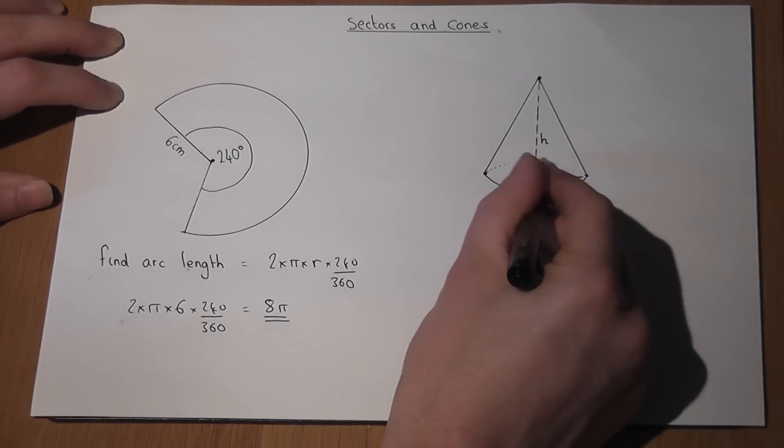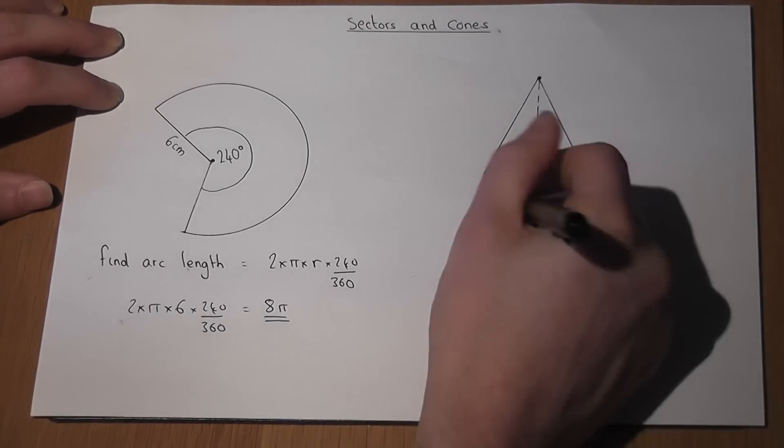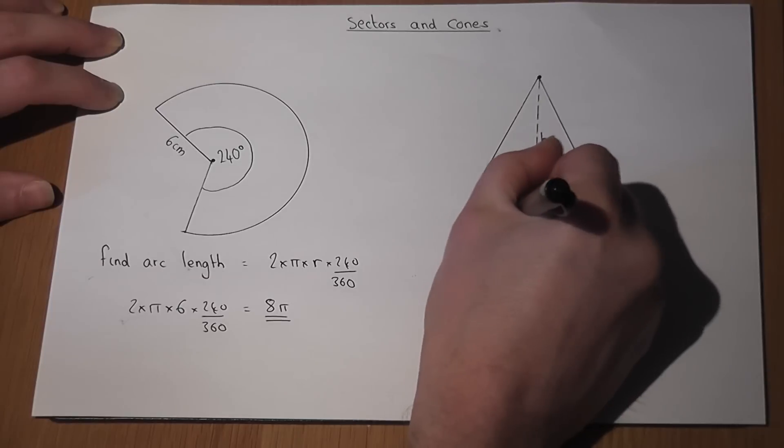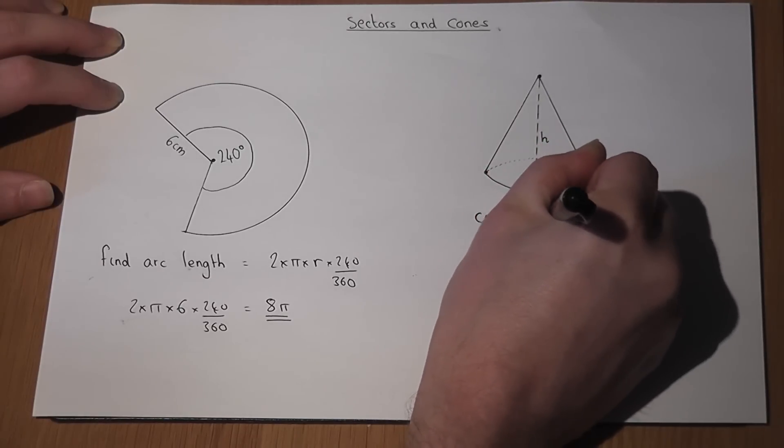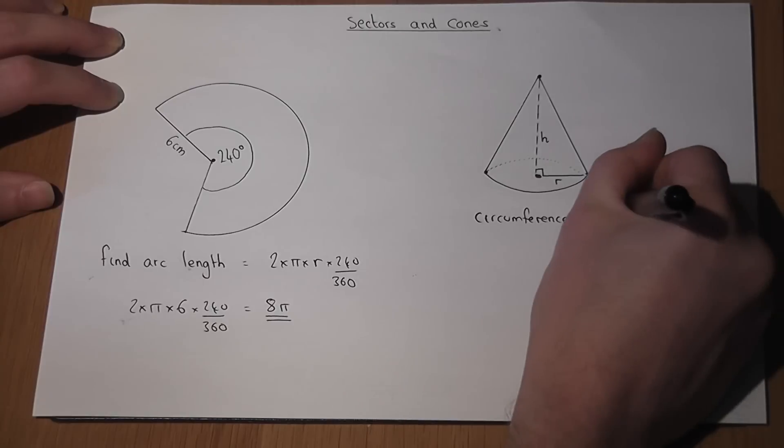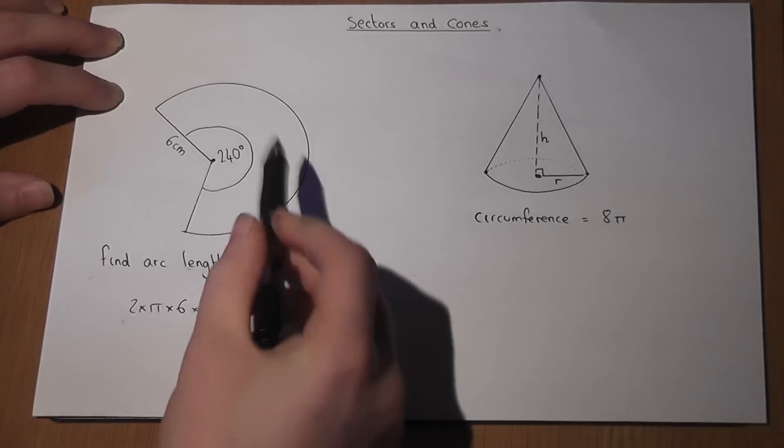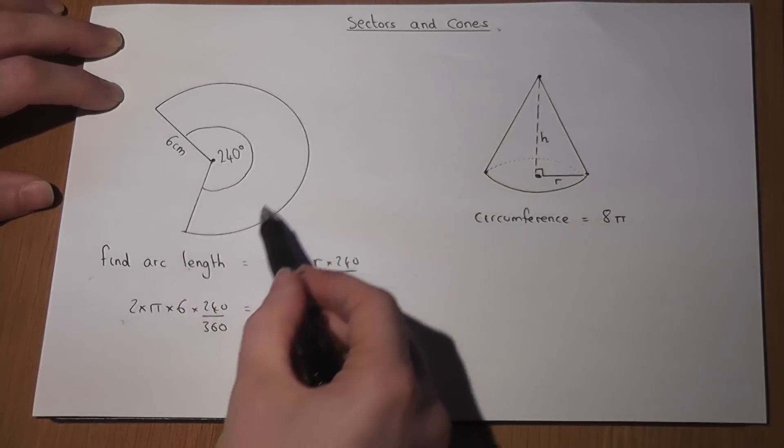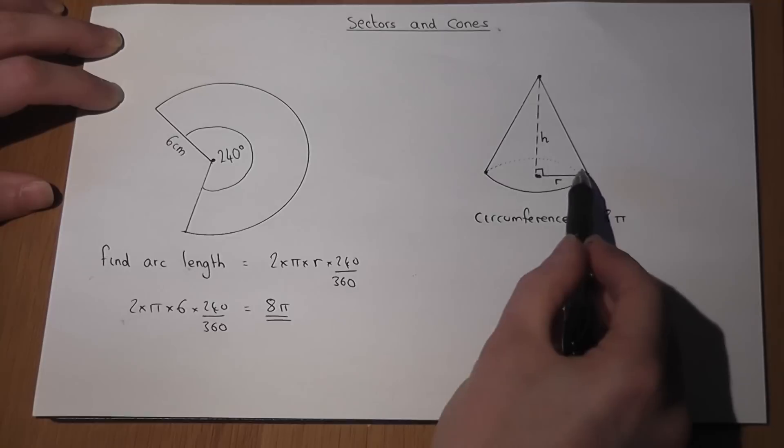So this circle here must have a circumference equal to 8 pi. So again, that curved part is what forms the circle underneath.